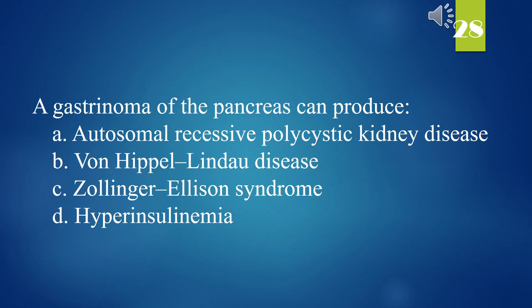A gastrinoma of the pancreas can produce: A. Autosomal recessive polycystic kidney disease. B. Von Hippel-Lindau disease. C. Zollinger-Ellison syndrome. D. Hyperinsulinemia. The answer is C. Zollinger-Ellison syndrome.